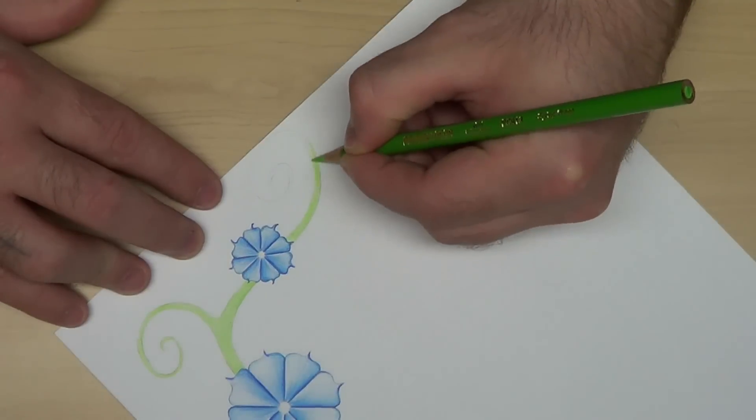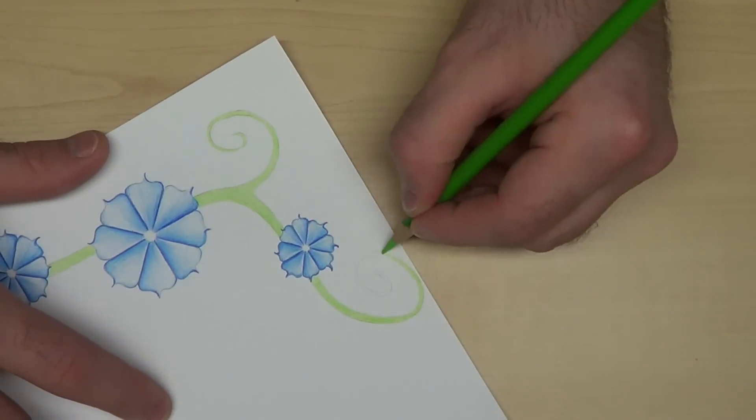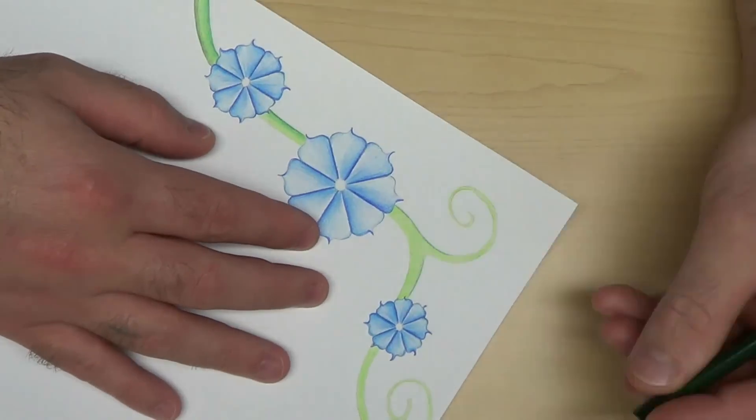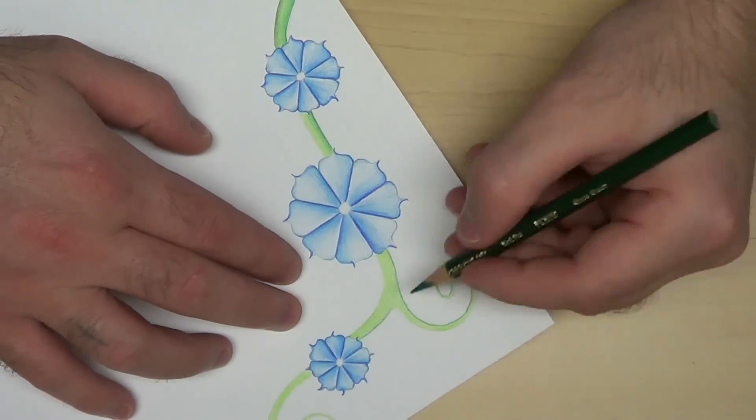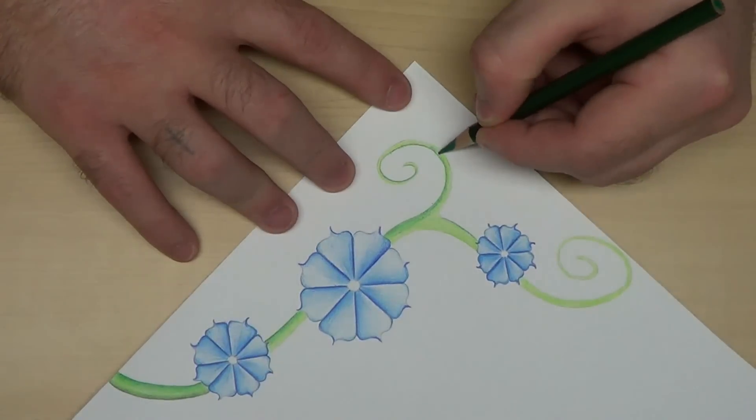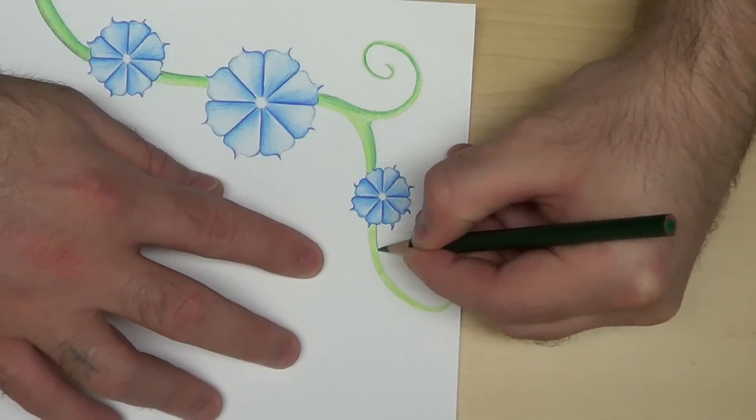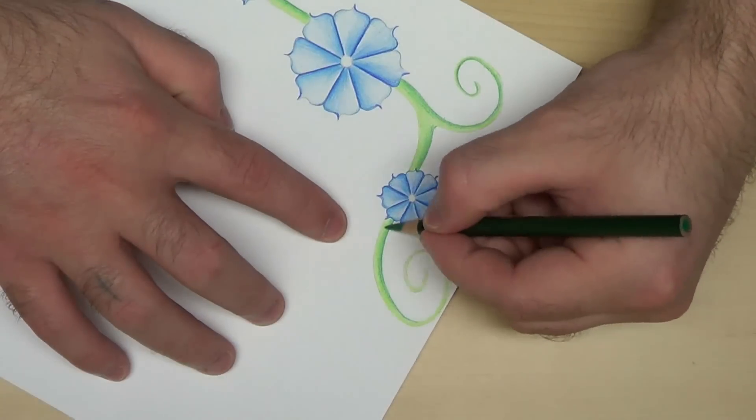First, coloring it in with the light green. And then doing the medium green. Then finally, the darker green.